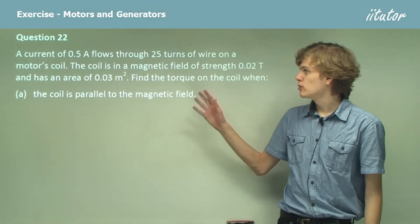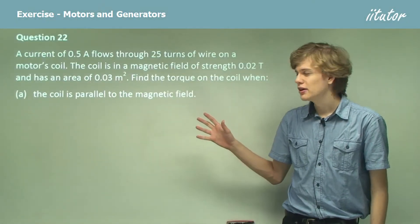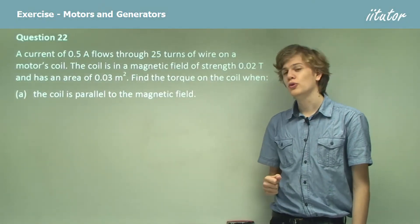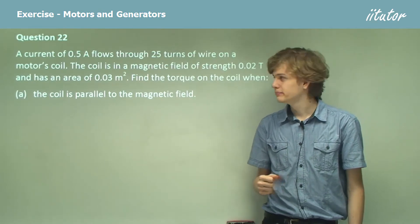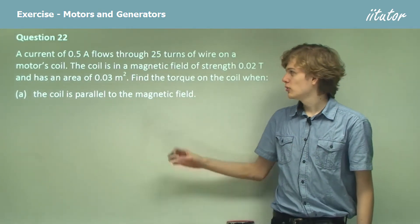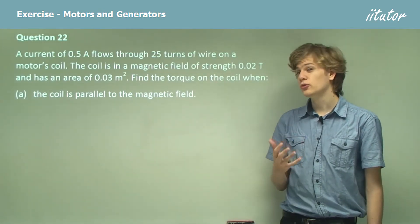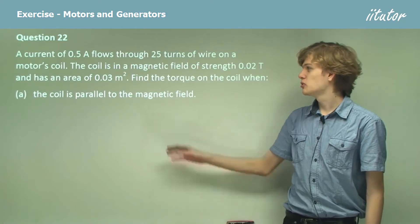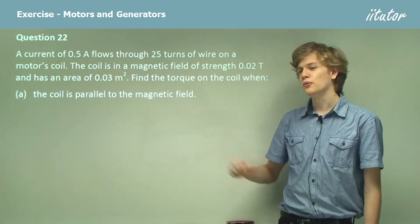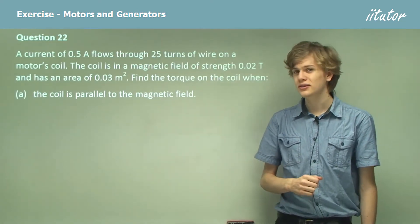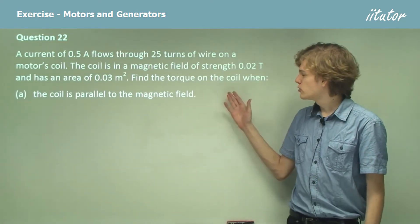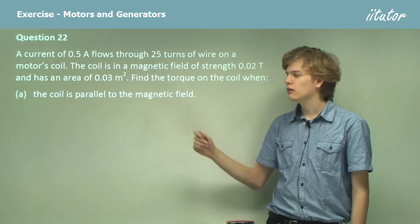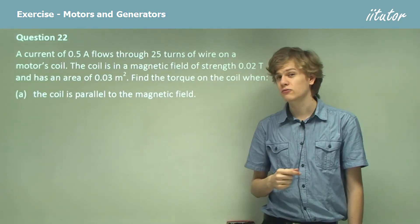A current of 0.5 amps flows through 25 turns of wire on a motor coil. The coil is in a magnetic field of strength 0.02 tesla and has an area of 0.03 square meters. Find the torque in the coil when the coil is parallel to the magnetic field.